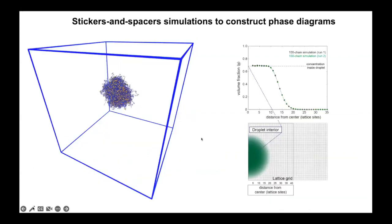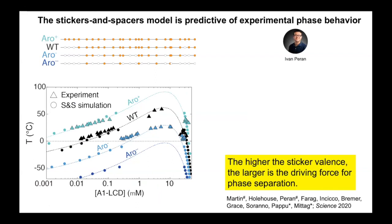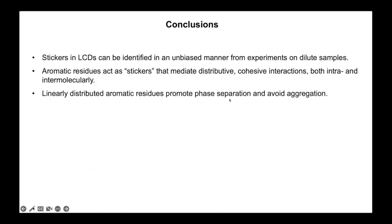The simulations show that the higher the sticker valence, the larger the driving force for phase separation. At a given temperature, a lower concentration of the aromatic-plus variant is required to hit the coexistence line compared to wild type or aromatic-minus. We also see why we never observed phase separation of aromatic-minus-minus experimentally — its critical point is below freezing. The key conclusions: stickers in the low-complexity domain can be identified in an unbiased manner from experiments on dilute samples, aromatic residues act as stickers mediating distributive cohesive interactions both intra- and intermolecularly, and they must be linearly distributed to give rise to dynamic liquid-like droplets rather than aggregation.